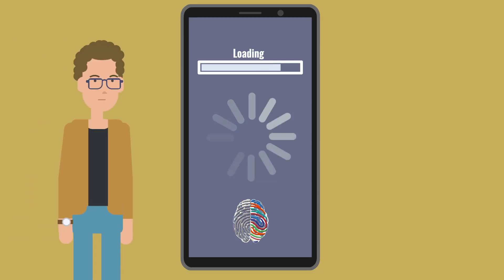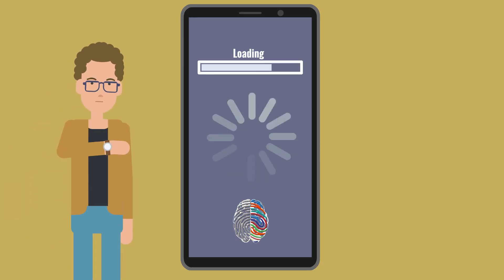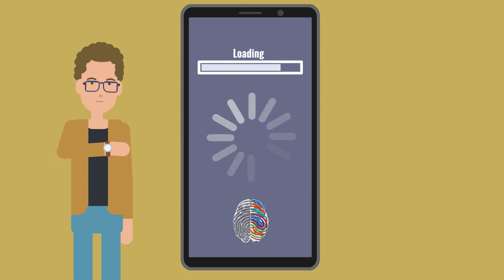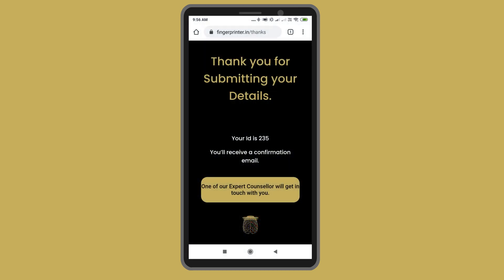Please wait a few minutes for the data to submit, depending on your internet speed. Follow the progress bar at the top and wait until you see the confirmation message: 'Thank you for submitting your details. Your ID is 123. You will receive a confirmation email and one of our expert counsellors will get in touch with you.'